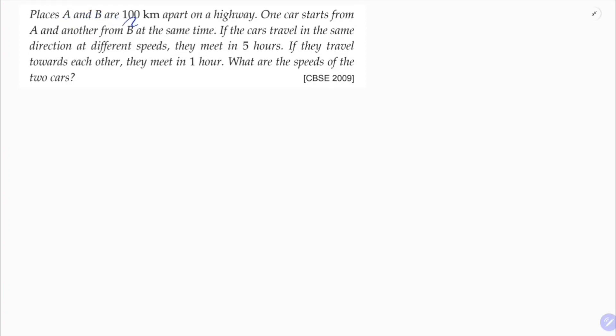Places A and B are 100 km apart on a highway. One car starts from A and another from B at the same time. If the cars travel in the same direction at different speeds, they meet in 5 hours. If they travel towards each other, they meet in 1 hour. So what are the speeds of the cars?